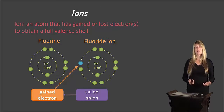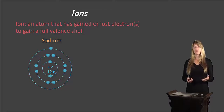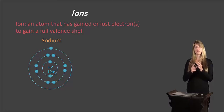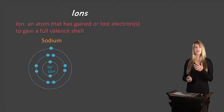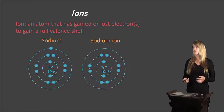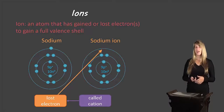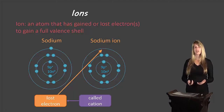Now let's take a look at sodium. Sodium has one electron in its valence shell. It can either lose that electron and have a full valence shell in the shell below, or it could gain seven electrons to fill its current valence shell. It's much easier to lose one than to gain seven, so sodium will lose that one electron. Atoms that have lost electrons to become ions are called cations.